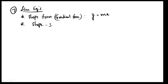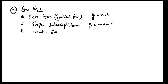If slope and y-intercept are given, use slope intercept form: y equals mx plus c, where c is the y-intercept. Next, point-slope form: if a point x1, y1 and slope m are given, the formula is y minus y1 equals m into (x minus x1).